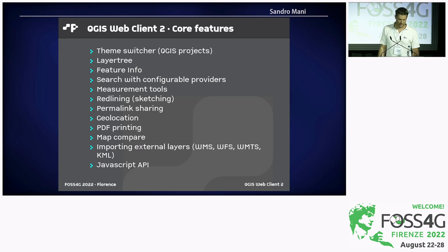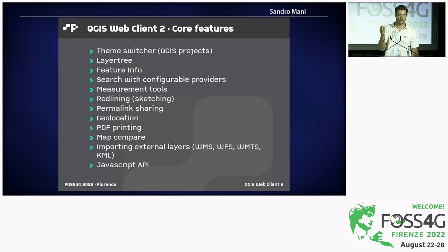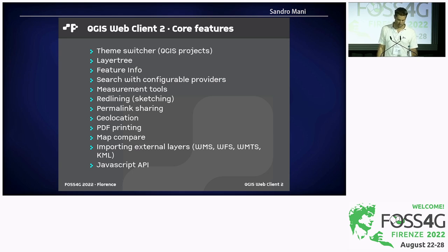There are measurement tools for point, line, and polygon. There are sketching or redlining tools where you can draw additional objects on the map. There's permalink sharing where you can copy a link that encapsulates the state of the viewer and share it with another user. Show location displays the current position. PDF printing works through the GetPrint capabilities of QGIS server. And a map compare tool allows you to compare the top layer with the rest of the map through a slider. It also allows importing external layers over WMS, WFS, and WMTS, local KML files, and provides a JavaScript API to allow external applications to interface with QWC.